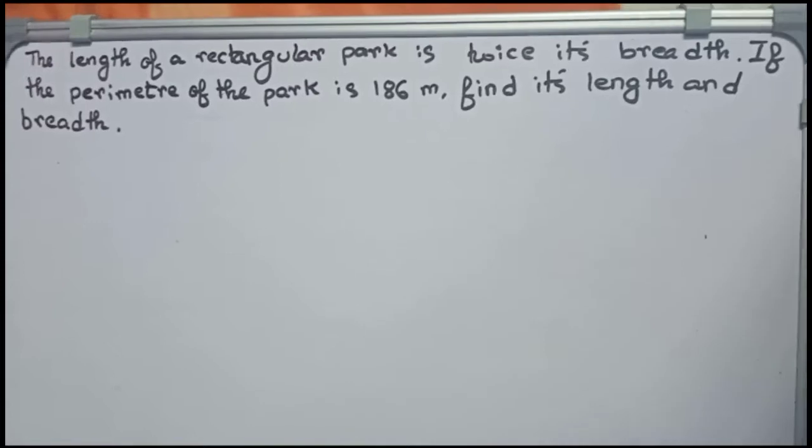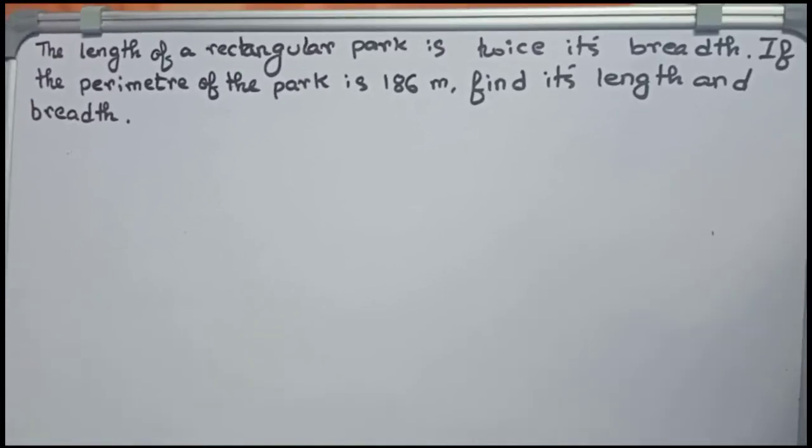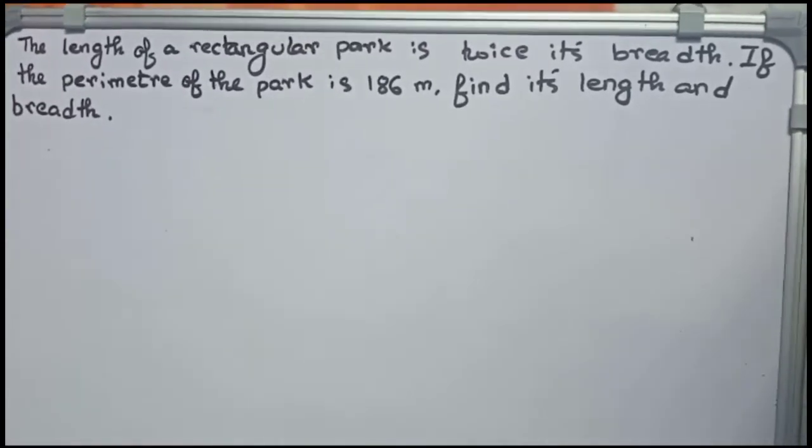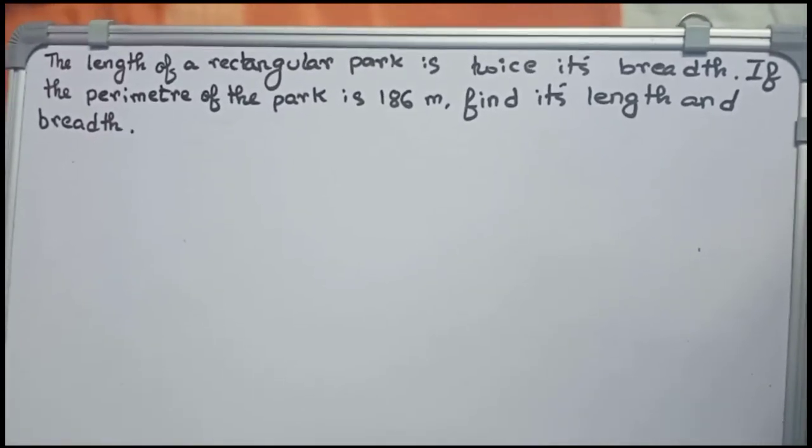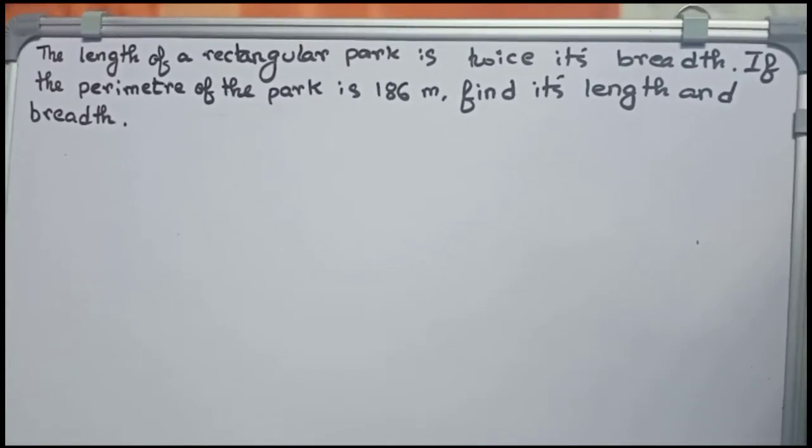Hello guys, welcome to this video. In this video, our question is: the length of a rectangular park is twice its breadth. If the perimeter of the park is 186 meters, find its length and breadth.